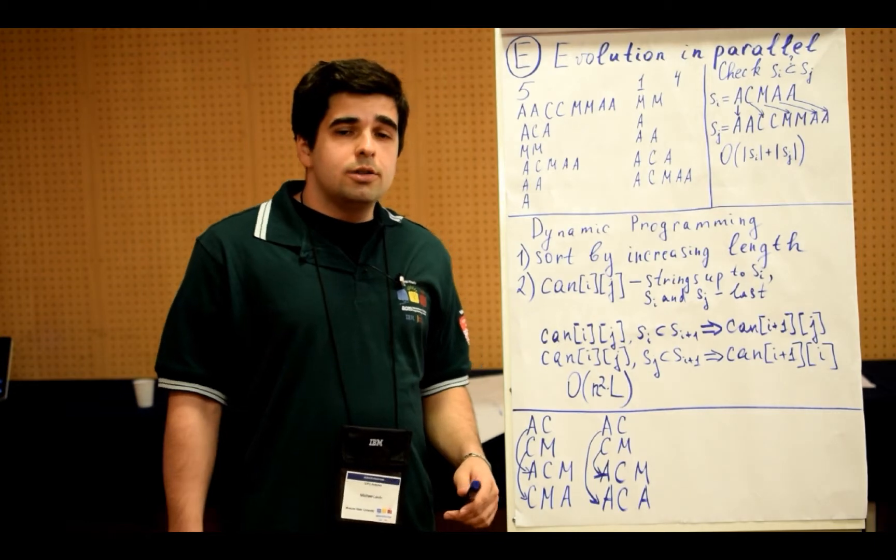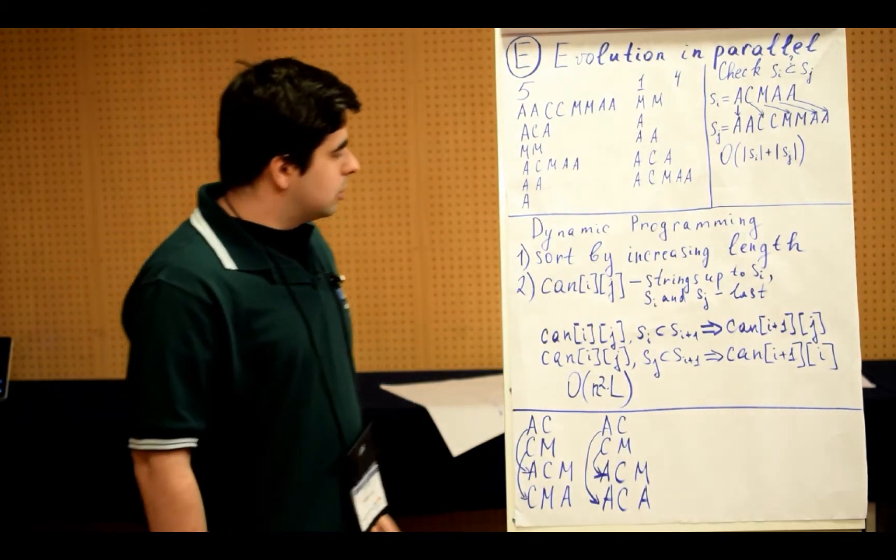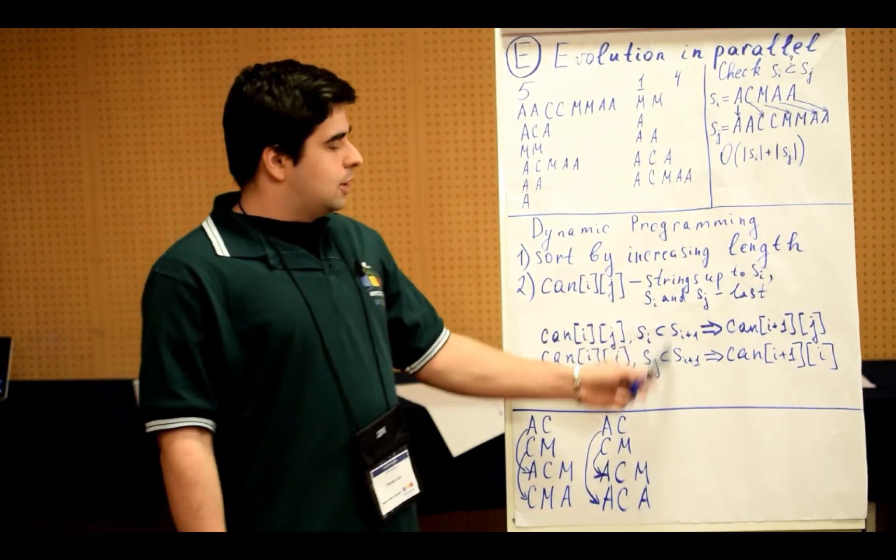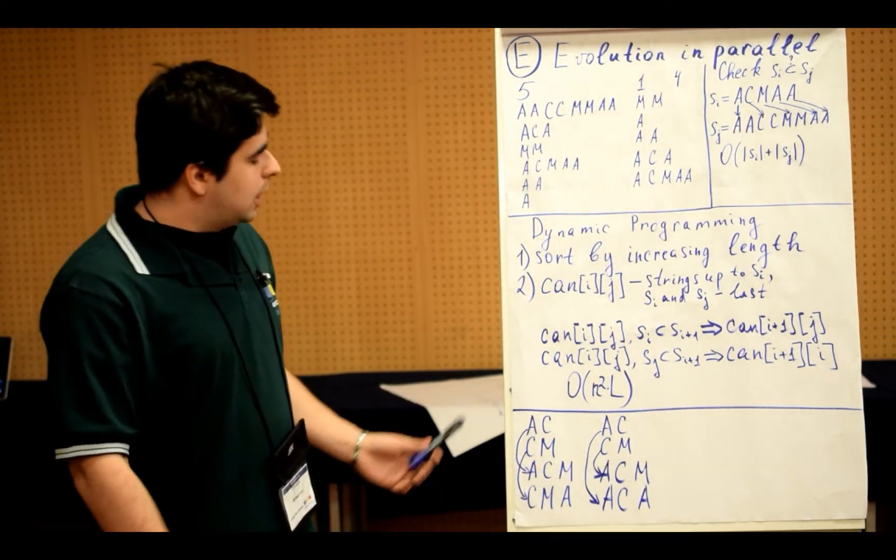But unfortunately, this is too long for the world finals. So we should somehow optimize this solution. And one idea could be that we can avoid one of these cases, and then the number of states of our DP will be much less. But this is not the case.